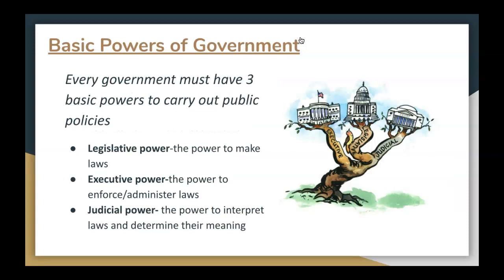What are the powers of government? Every government must have three basic powers to carry out public policies. Legislative powers, which is the power to make laws. Executive powers, which is the power to enforce and administer laws. And judicial powers, which is the power to interpret laws and determine their meaning. The United States government serves as a model for all three powers — we have three branches of government, the executive, legislative, and judicial, which all carry out these powers in uniquely defined ways for public policies.